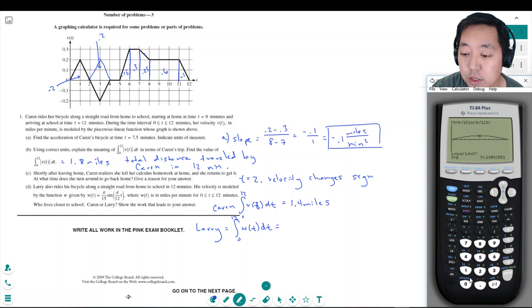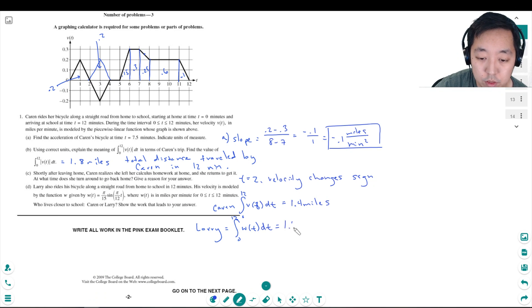Lower limit 0, upper limit 12. Beautiful. Perfect. 1.6.